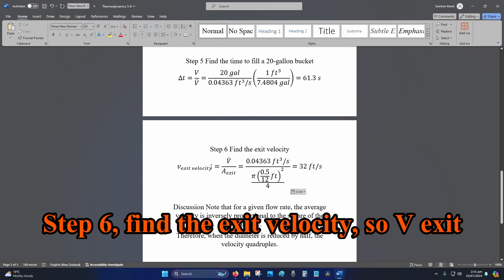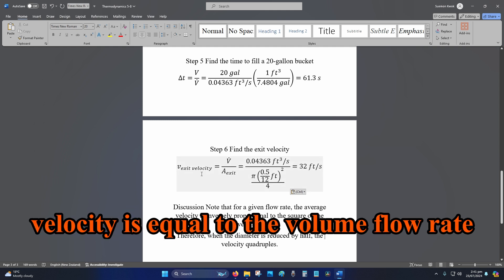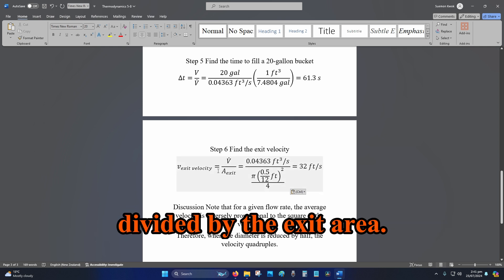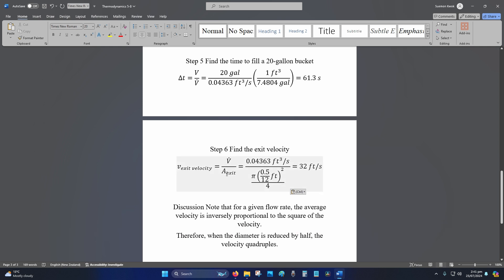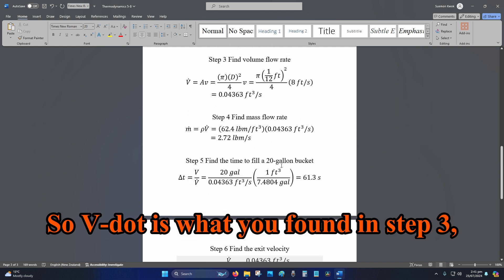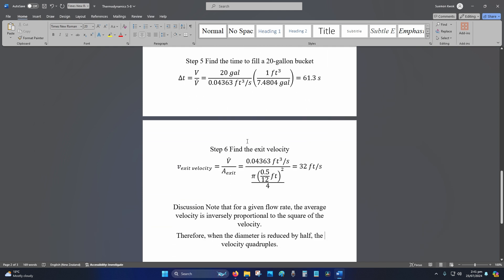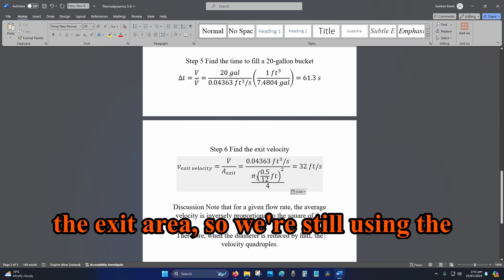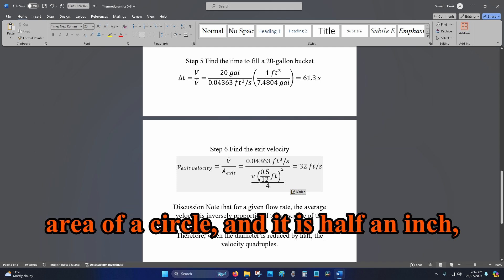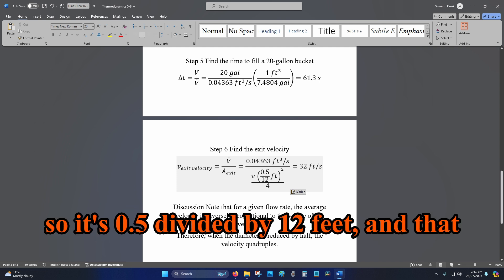Step 6, find the exit velocity. So V exit velocity is equal to the volume flow rate divided by the exit area. So V dot is what you found in step 3, once again, it's this value over here. The exit area, so we're still using the area of a circle, and it is half an inch, so it's 0.5 divided by 12 feet.